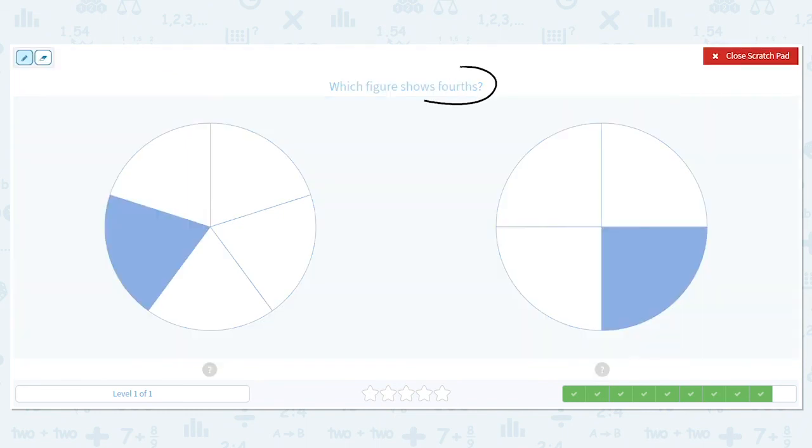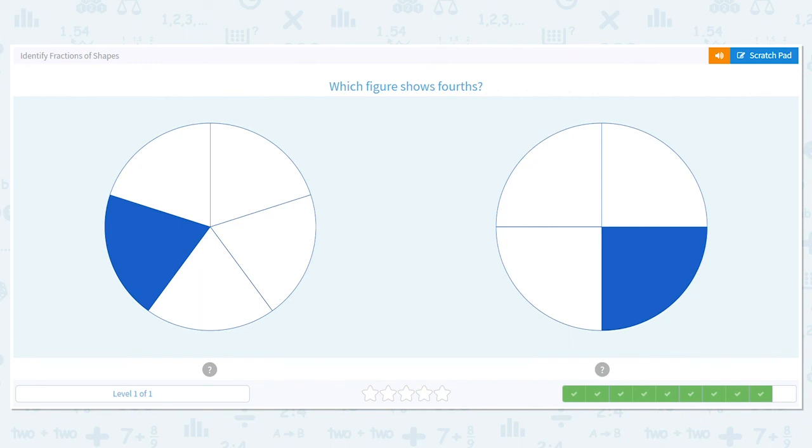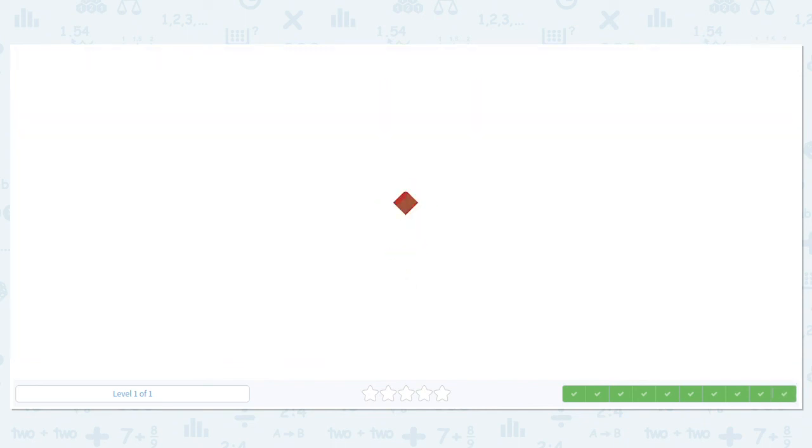Which one here shows fourths? Four. So are we looking for four shaded pieces or four total pieces? So on my first circle, I have one, two, three, four, five. So this one would be fifths. But how about on my other circle? One, two, three, four. This one would be fourths. I have four equal pieces. So that means my second circle is the fourths. Excellent job with these fractions.